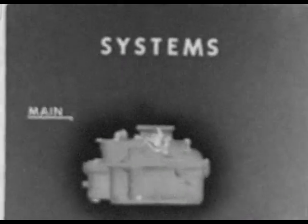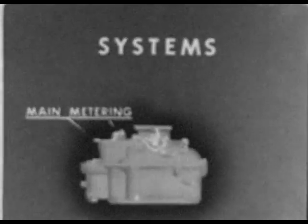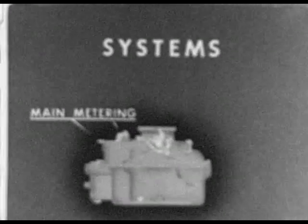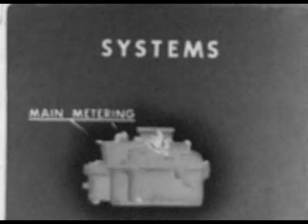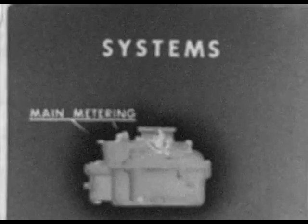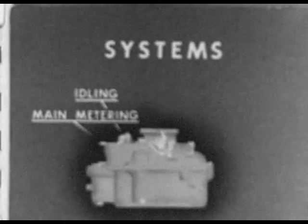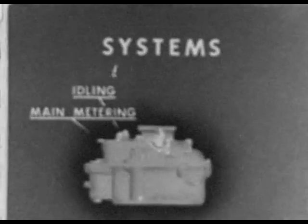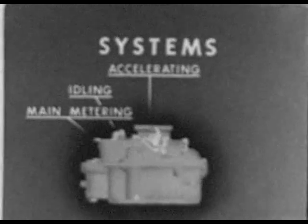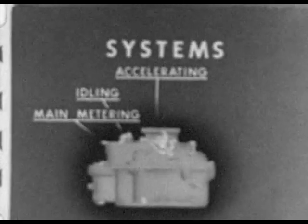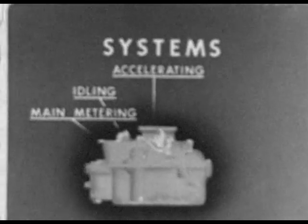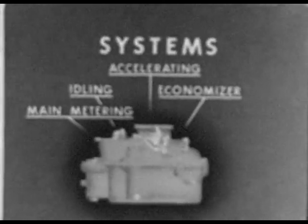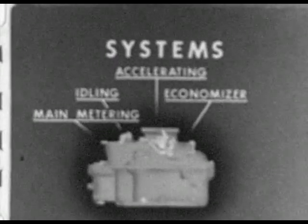Carburetors in current use contain a main metering system, which supplies a constant air-fuel ratio throughout the power range of the engine. An idling system supplies the rich mixture required at idling speed. The accelerating system supplies the rich mixture required during rapid acceleration. The economizer or enrichment valve supplies the rich mixture required at or near full throttle.